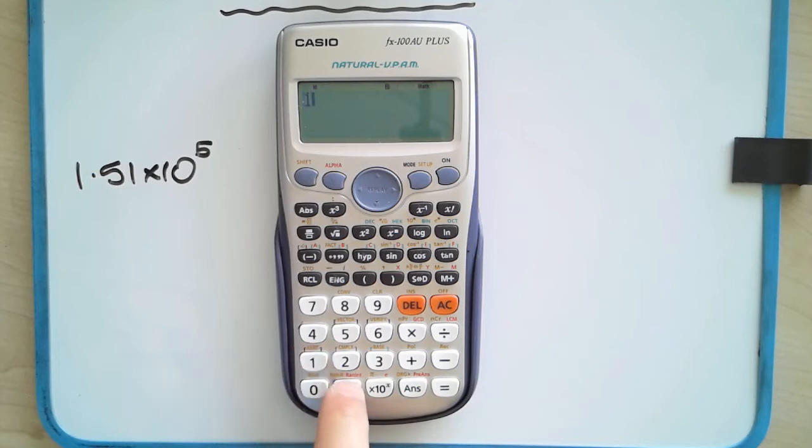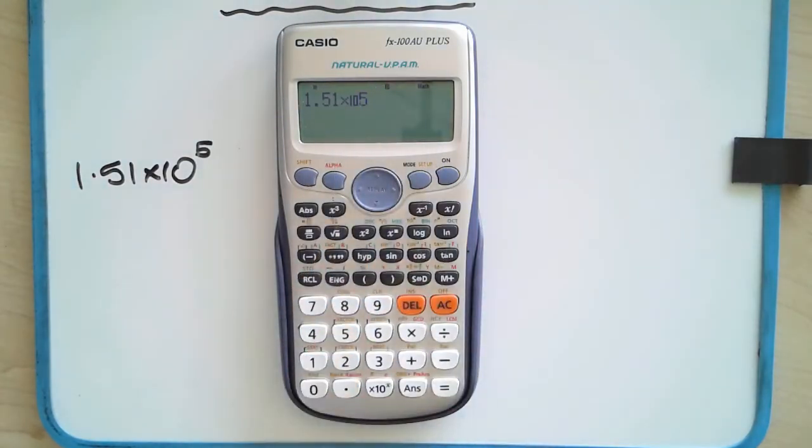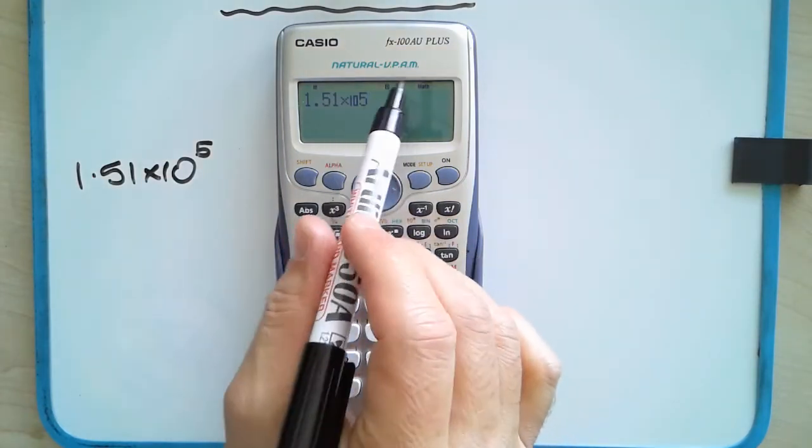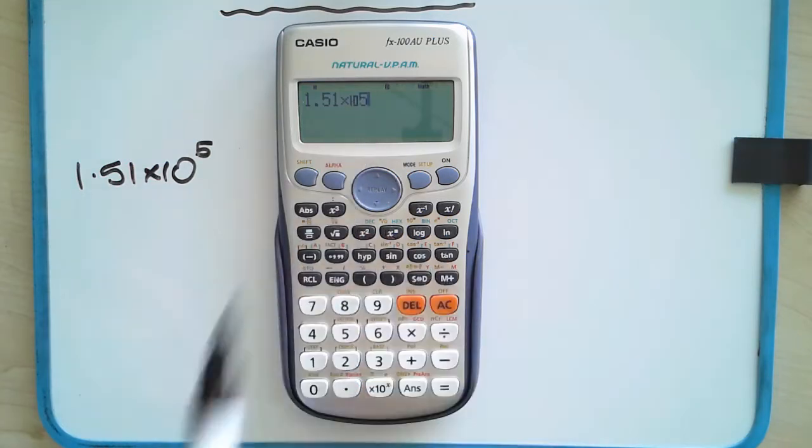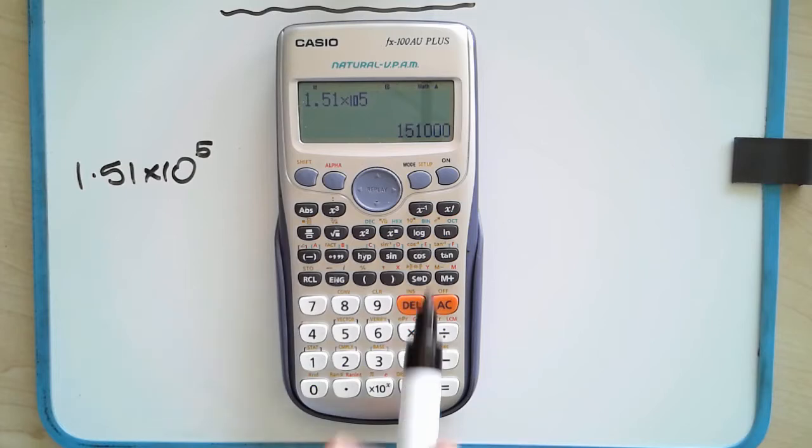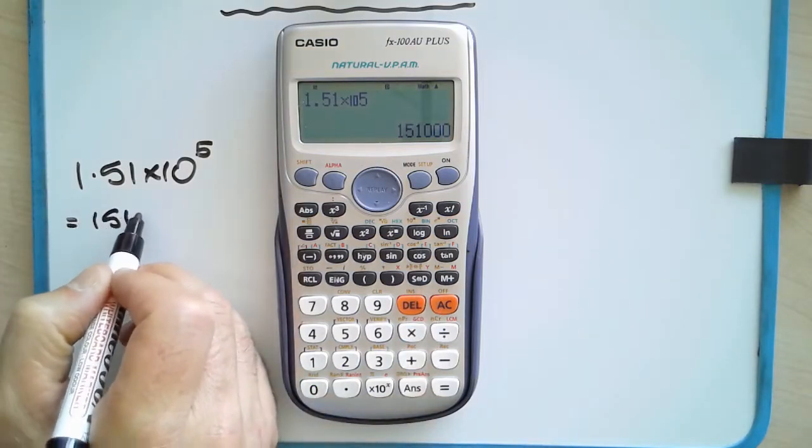You would enter that in as 1.51. You press this key here, times 10 to the power of whatever the power you want. So let's say the power of 5. It's a little bit counterintuitive in that the 5 should probably be a small 5 because that 5 is an index. It's meant to be a little bit higher up. But that's okay. The calculator interprets it as an index anyway. And the regular decimal number is 151,000.